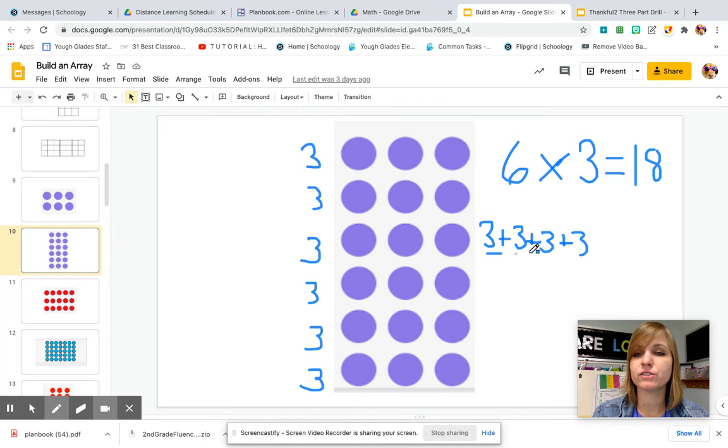If I add all of these threes together, it will also give me 18. And I'm going to write that here. That's four. I need six. Six rows of three. That's going to be shown here on my problem as well. One, two, three, four, five, six. And that also gives me 18.